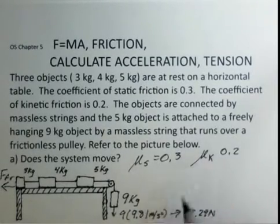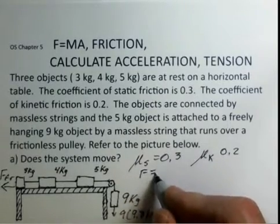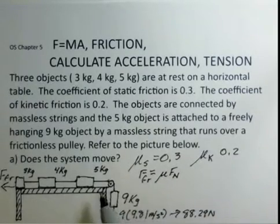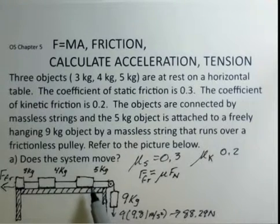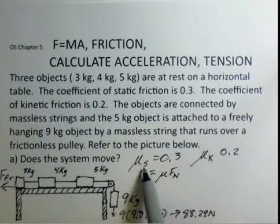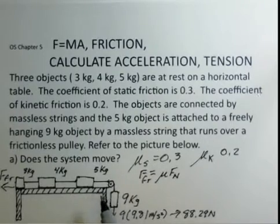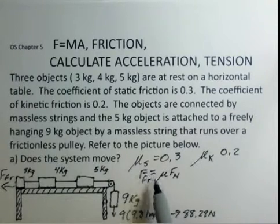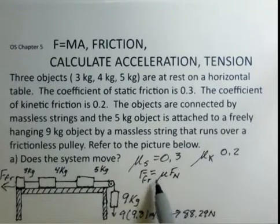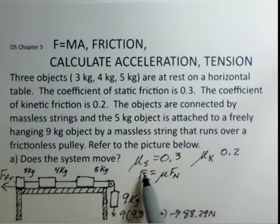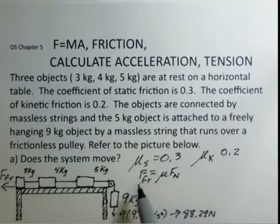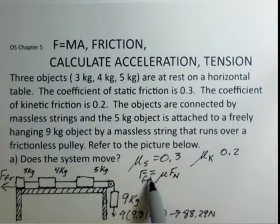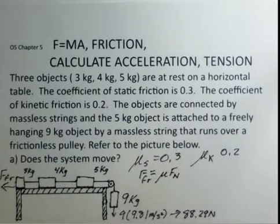Which coefficient should we use? The force of friction equals the coefficient times the normal force. Since the system starts at rest and we're deciding if it will move, we use the static coefficient of friction. Static friction is a variable force — there's only as much as needed — so we use the equal sign to get the maximum static friction force.